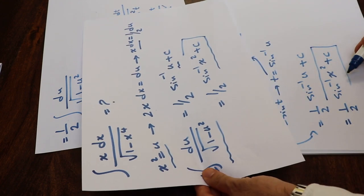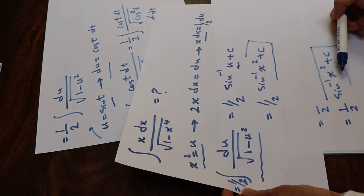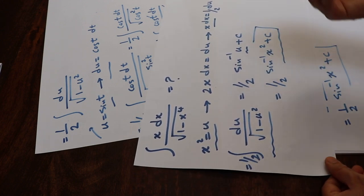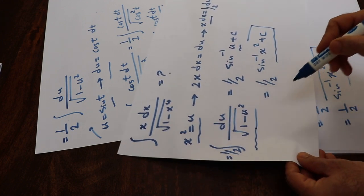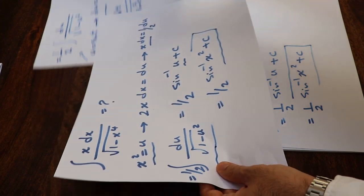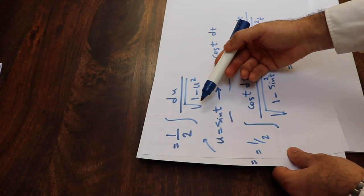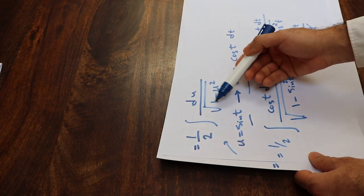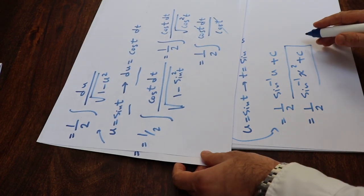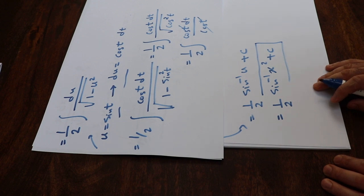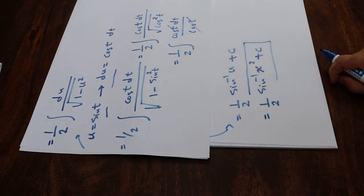Interestingly, when you compare this solution with the first one, they're exactly the same. The first approach used information from the table of integrals, and the second approach derived the integral of du over the square root of 1 minus u² from scratch. I hope you found this video helpful. Please feel free to subscribe to this channel so you get updated when I upload new videos. Thank you.